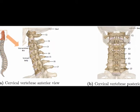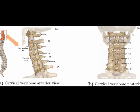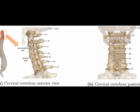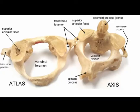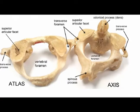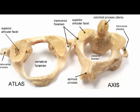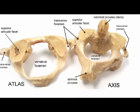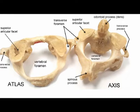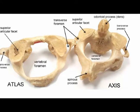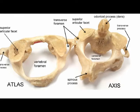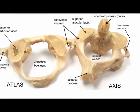Vertebrae C3 through C7 are known as typical vertebrae because they share common features, while C1 and C2 are known as atypical vertebrae. C1 and C2 are atypical due to the presence of special bony structures designed to move and support the skull, while C3 through C7 are typical cervical vertebrae.